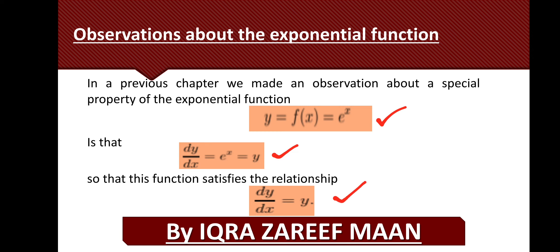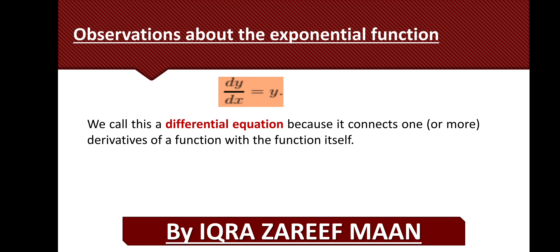So dy/dx = y. This is called a differential equation because it contains one or more derivatives of the function with respect to the independent variable and relates them to the function itself. Here y is the function of x, and dy/dx is the derivative of y with respect to x. This equation gives us a relationship between the derivative and the function — that's why we call it a differential equation.